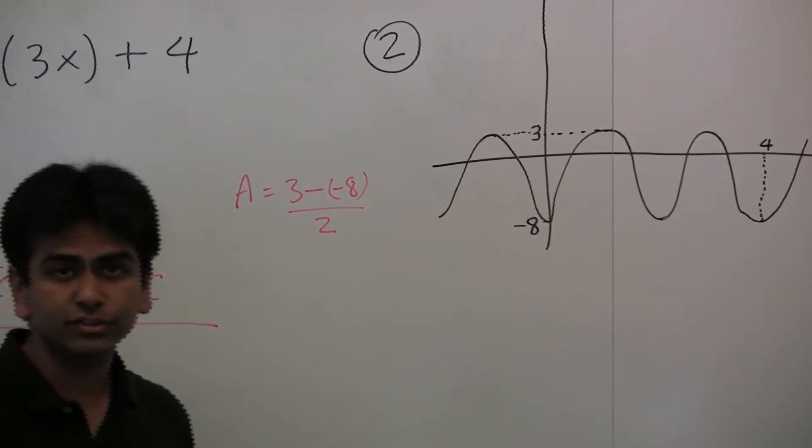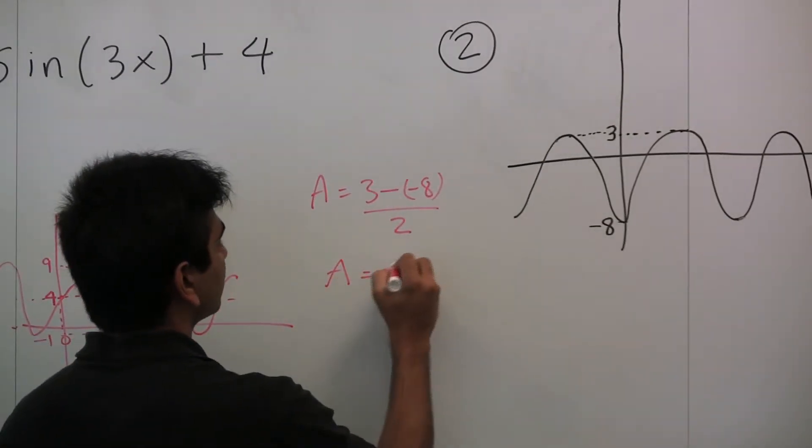a is 3 minus negative 8 divided by 2, meaning 3 plus 8 over 2, so that's 11 halves, which is 5.5.